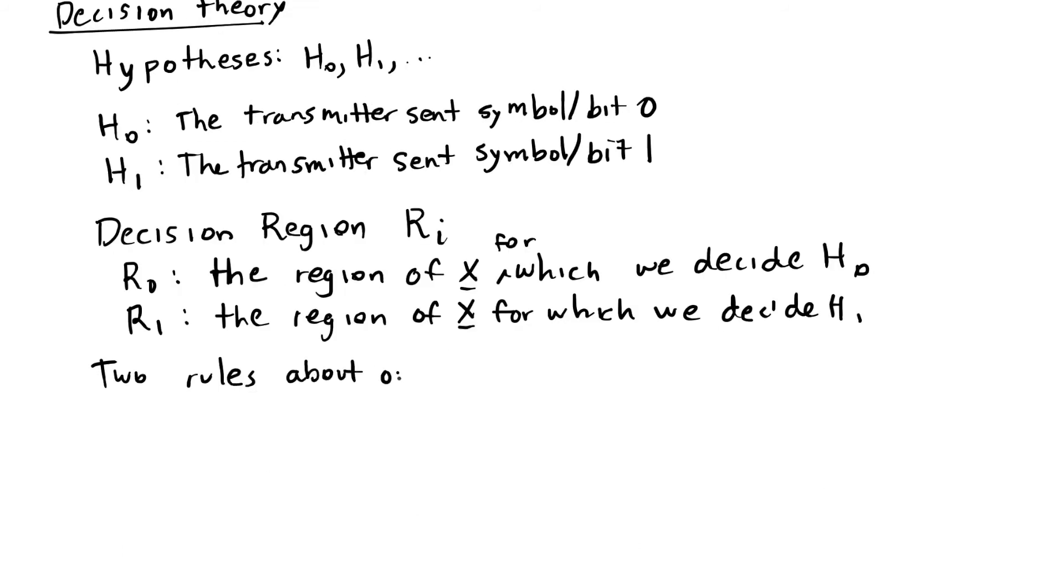Two rules about our decision rules. First, there's no overlap. We're either going to decide R0 or R1, not both at the same time. And secondly, there's no being indecisive. We're always going to make a decision. So R0 union R1 is equal to the entire sample space.